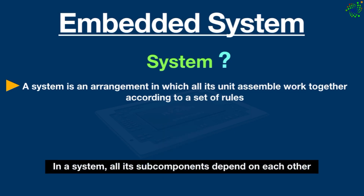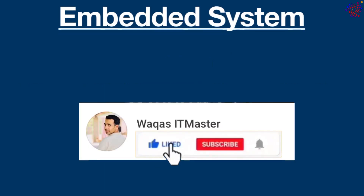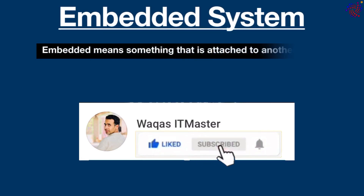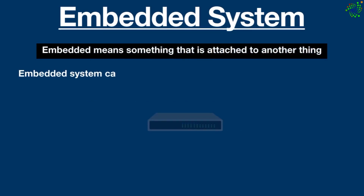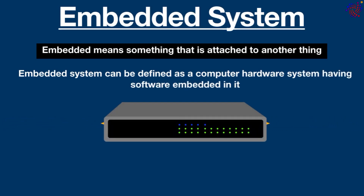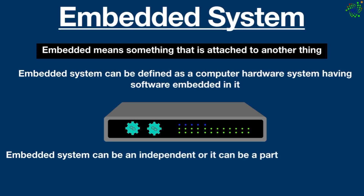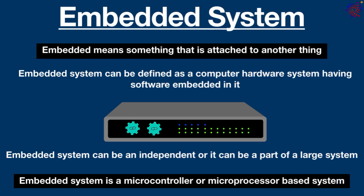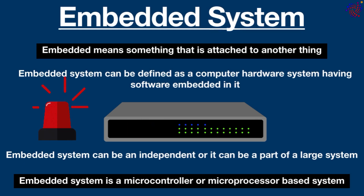So we can say that in a system, all its sub-components depend on each other. Now let's get straight into the embedded system. As the name suggests, 'embedded' means something that is attached to another thing. Basically, an embedded system can be defined as a computer hardware system having software embedded in it. It can be independent or part of a larger system. Technically, an embedded system is a microcontroller or microprocessor-based system developed to perform a specific task. For example, a fire alarm is an embedded system — it senses only smoke. Other embedded systems can be found in routers, gateways, washing machines, dishwashers, and so on.